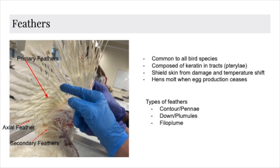The size and shape of these structures are dependent on sex hormones and are thought to have purely ornamental purpose. Now let's move on to the feathers, which is a characteristic shared by all avian species. These structures were derived from reptilian scales in evolution. They are made from keratin and are formed through tracks called terrelay. The purpose of these structures is to shield the skin from damage and extreme temperatures, but also for flight.